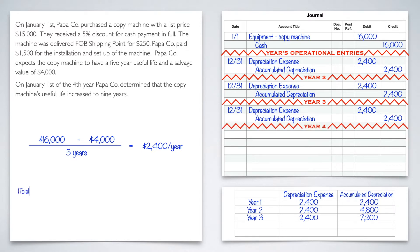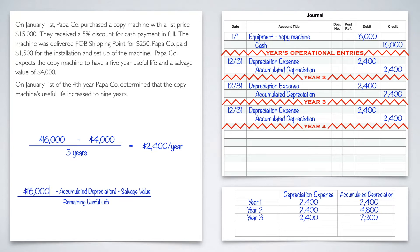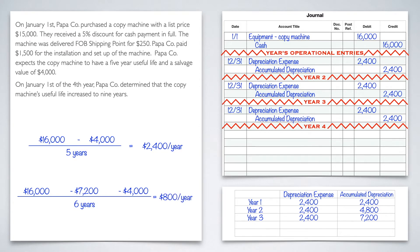We're going to start with TAC — always where we start. But remember, this is only going to impact what we have not depreciated yet, so we have to take out what we have already depreciated, which is our accumulated depreciation. So: TAC minus accumulated depreciation minus the salvage value, all divided by the remaining useful life. Our TAC is still $16,000. This is January 1st of the fourth year, so we use the third year's accumulated depreciation of $7,200. Salvage value is still $4,000. The useful life is now nine years, and we've already done three years, so we depreciate over the remaining six years. That gives us $800 per year.